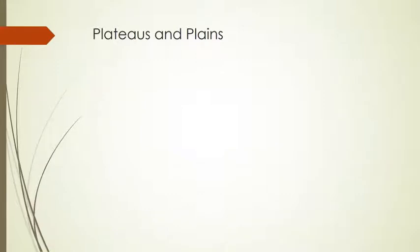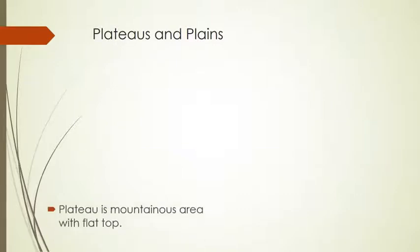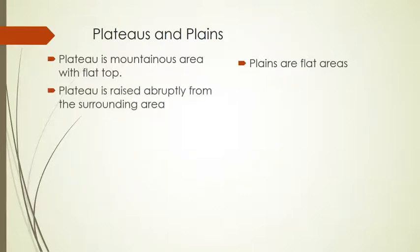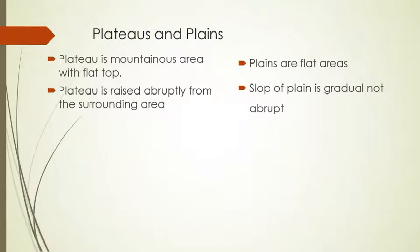Here we have comparative features of plateaus and plains, which will help us understand the basic difference between them. First point: a plateau is a mountainous area with a flat top, whereas plain areas are only flat areas. Second point: a plateau rises abruptly from surrounding areas, whereas the slope of plains is gradual, not abrupt.